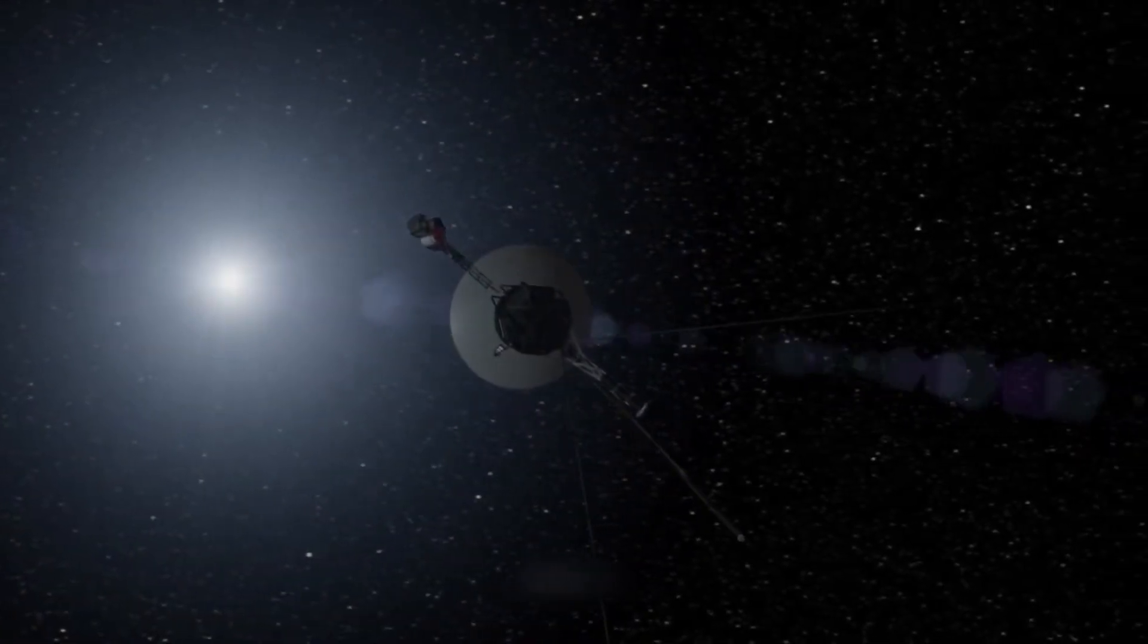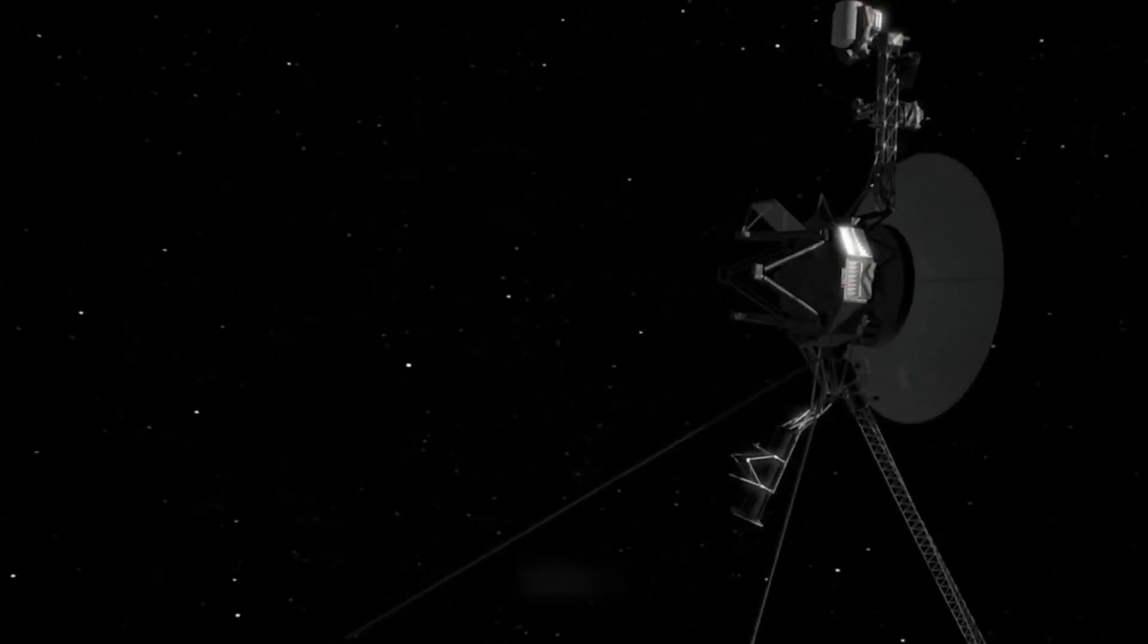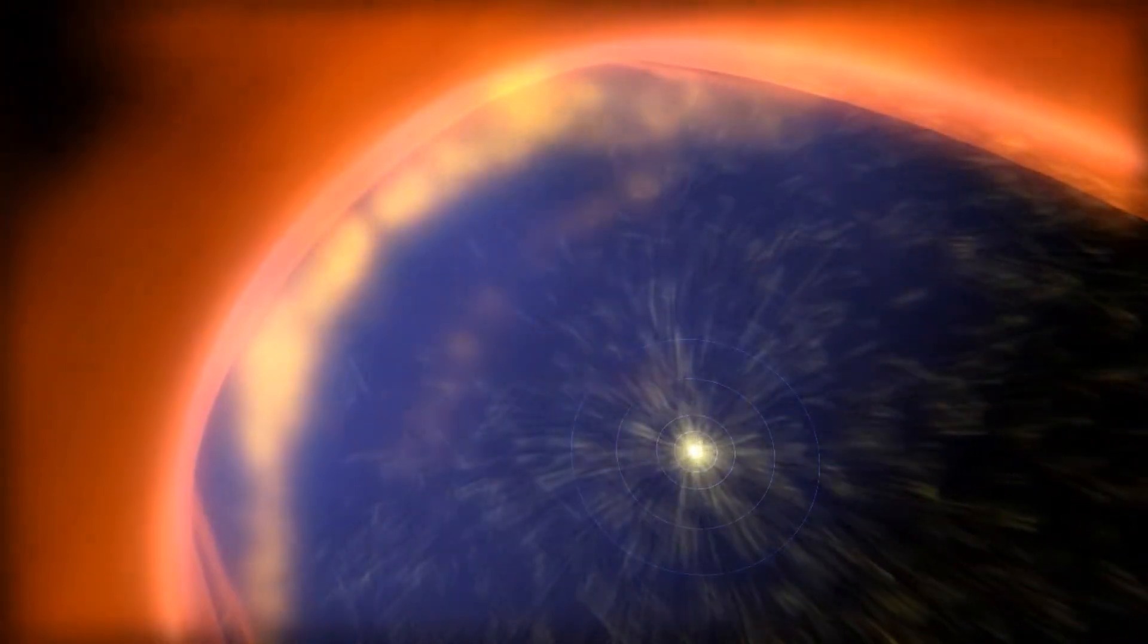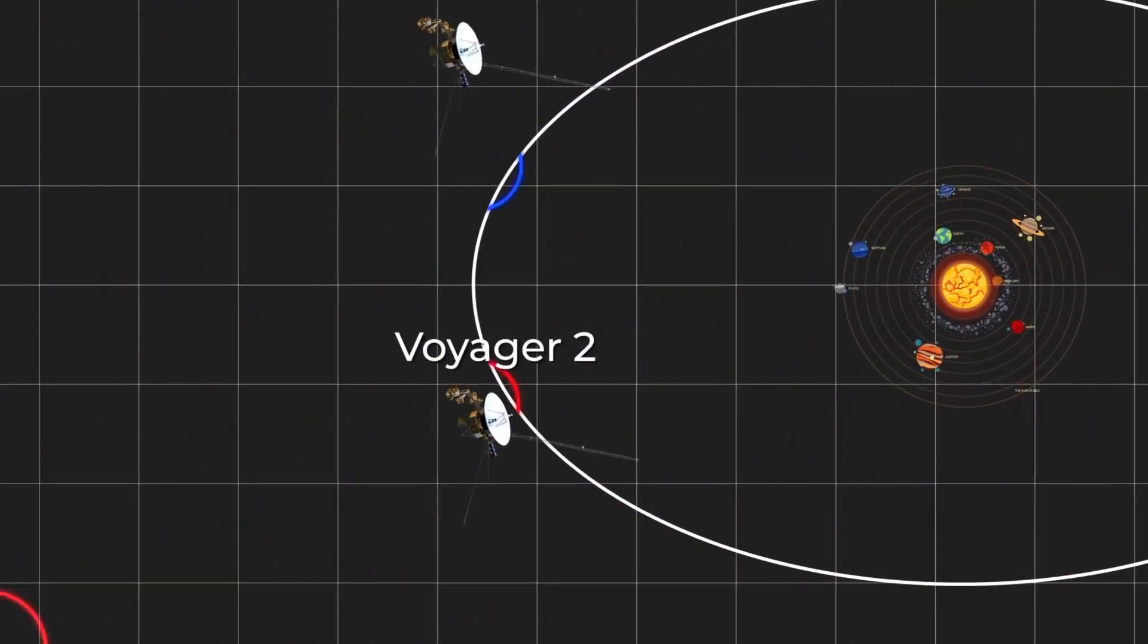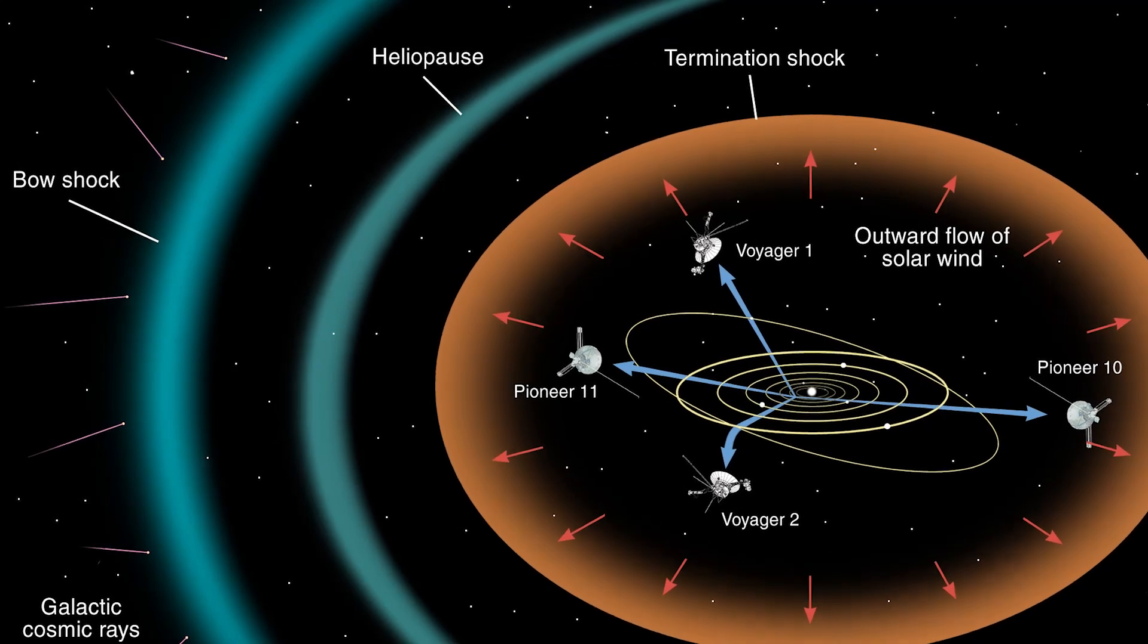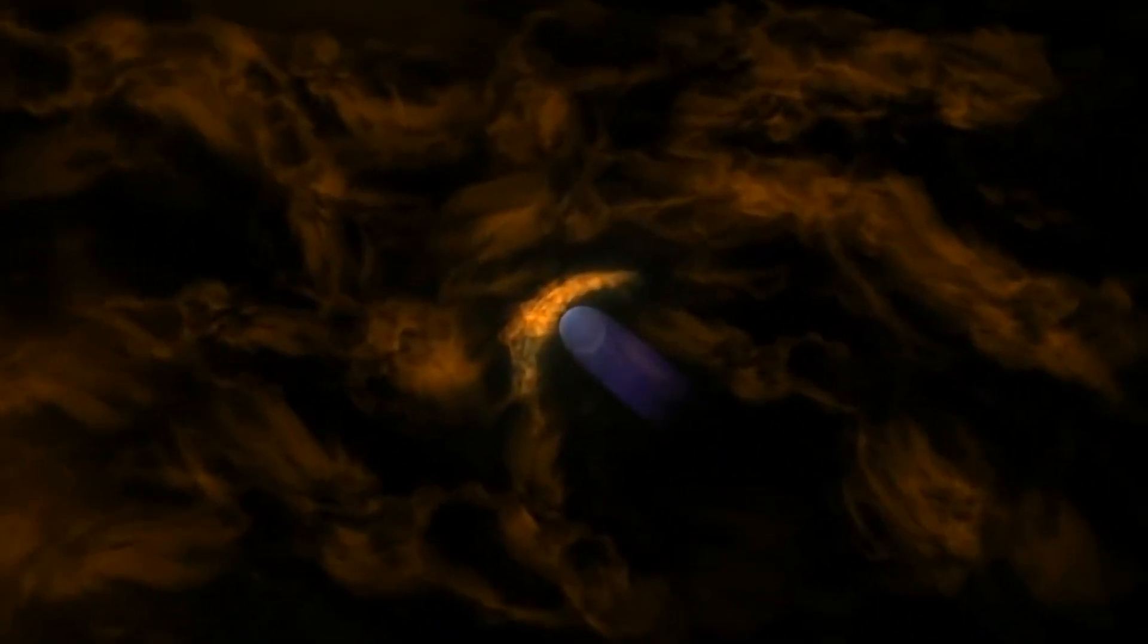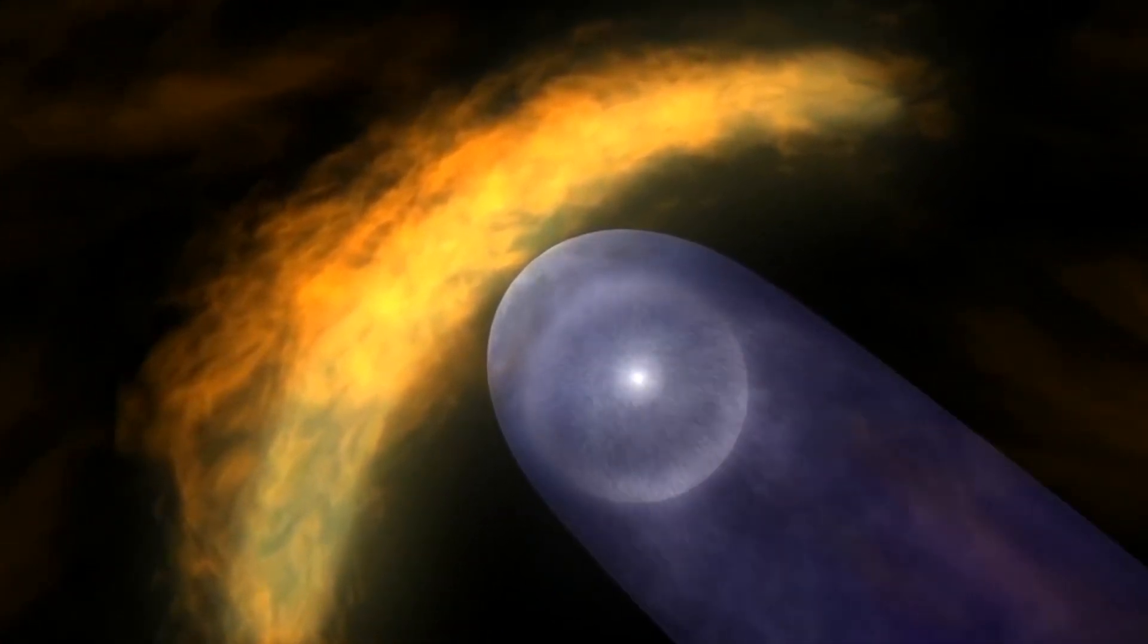The only artificial objects known to have entered interstellar space so far are the Voyager probes, which crossed the heliopause in 2012 and 2018 respectively. Their observations were critical in establishing the existence of the heliopause, but it is evidence that a system consisting of only two sensors cannot accurately detect a three-dimensional structure in space. However, what we should be worried about is the asymmetry of the heliopause, which might lead to an invasion of extraterrestrial life.